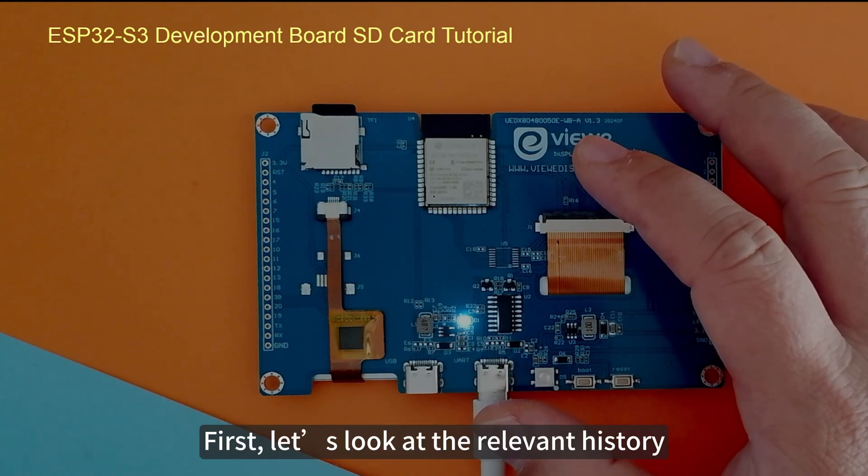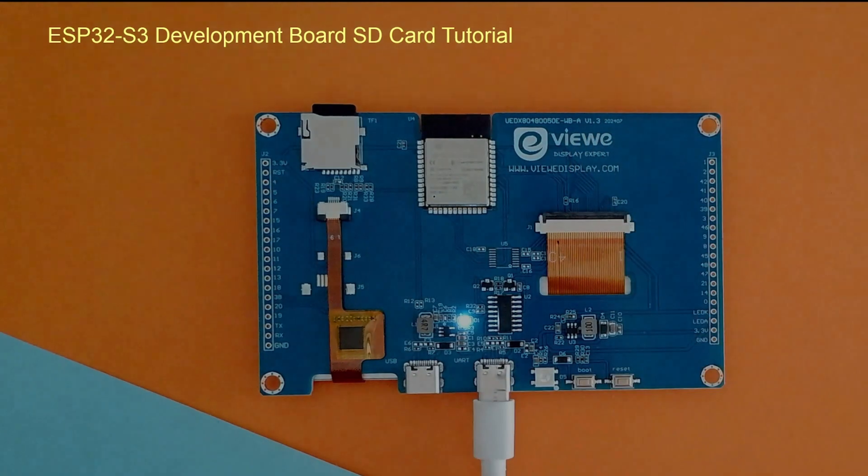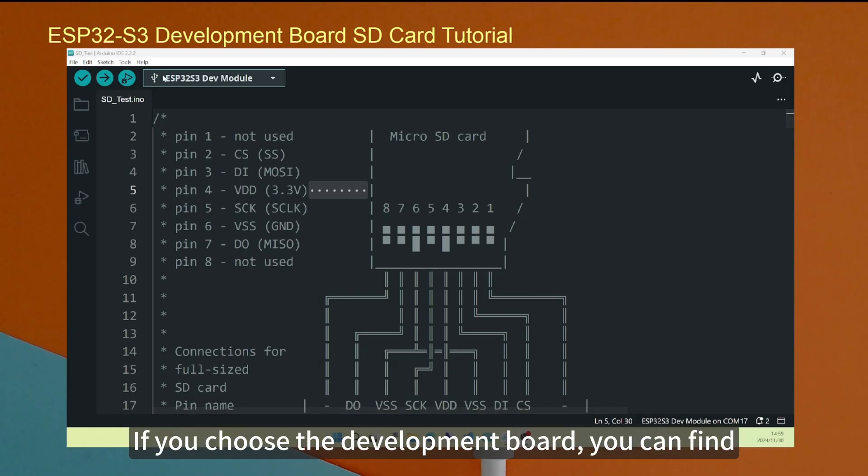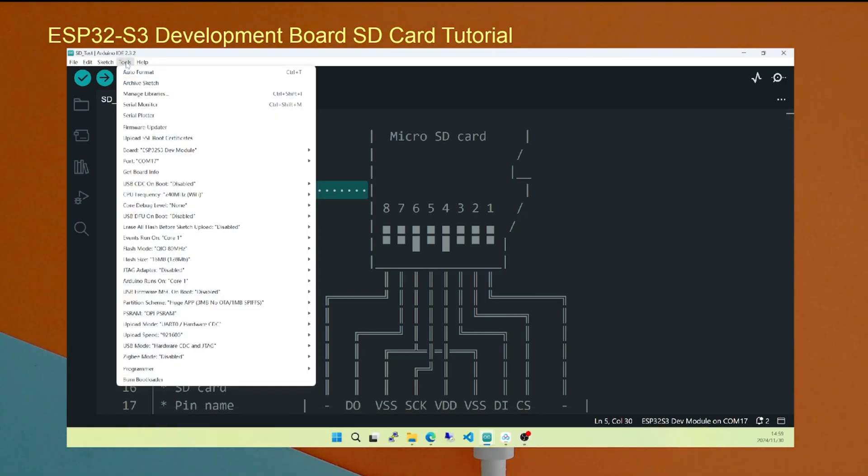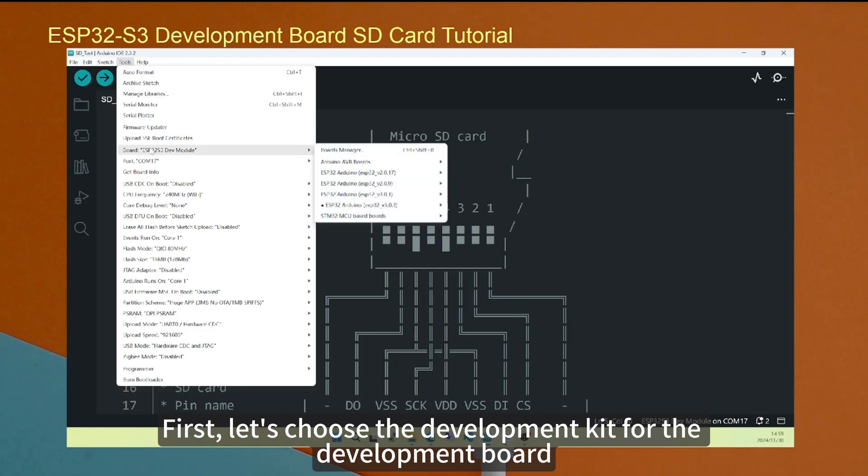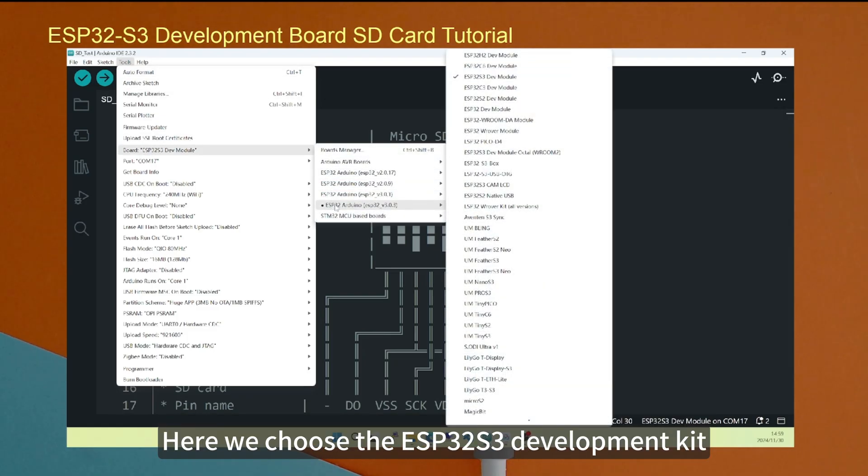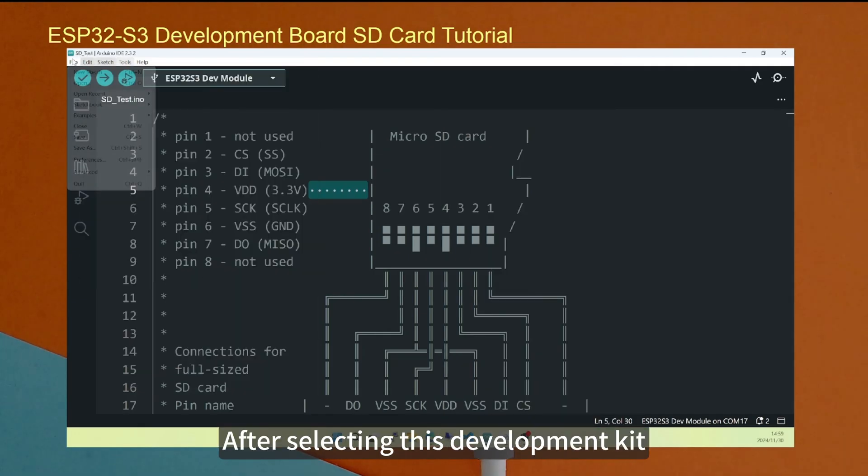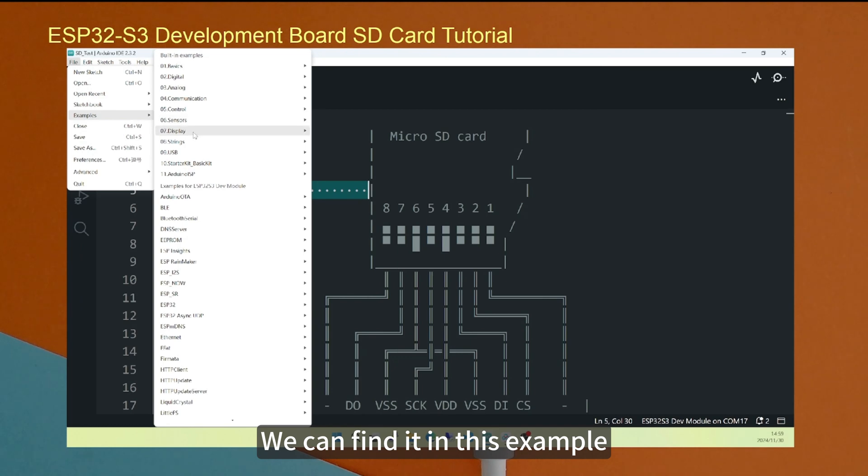First, let's look at the relevant history. Where is this process? If you choose the development board, you can find it. Let's choose the development kit for the development board. Here we choose the ESP32-S3 development kit. This is version 3.03. After selecting this development kit, we can find it in this example.